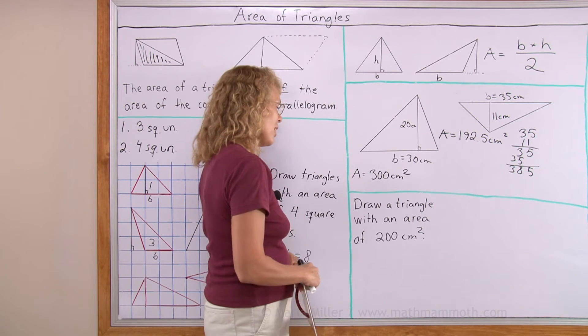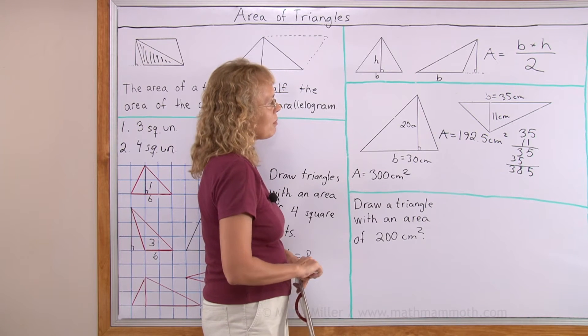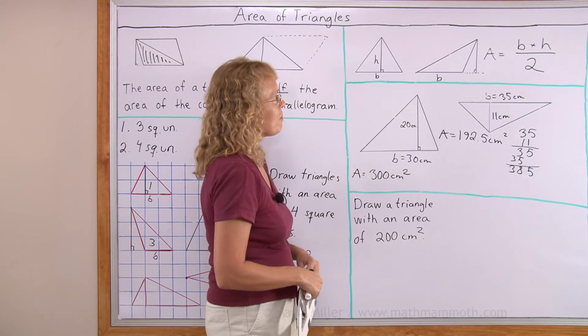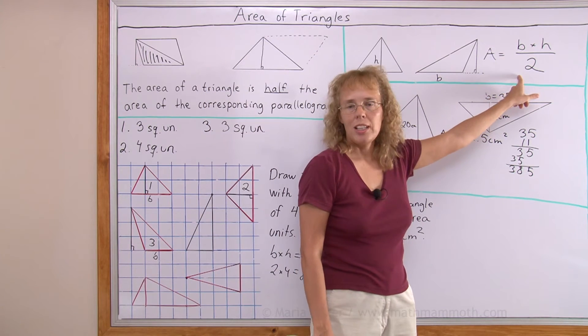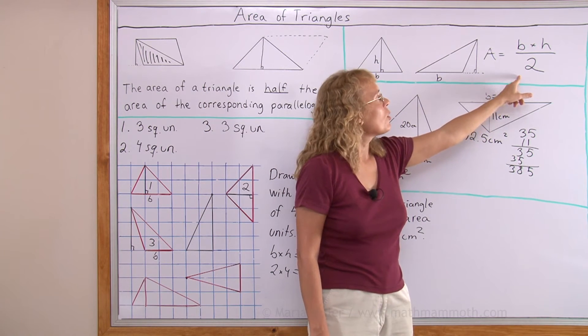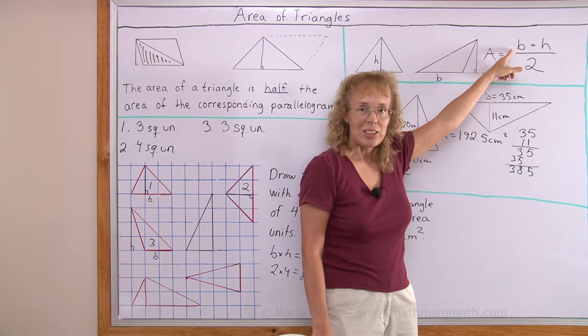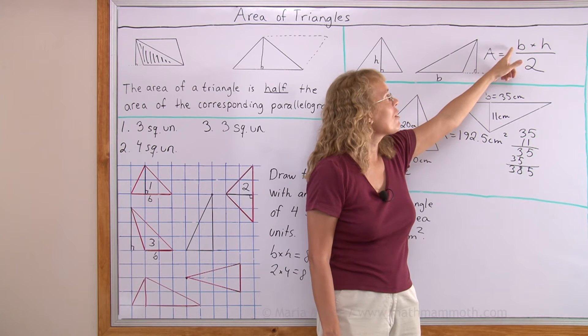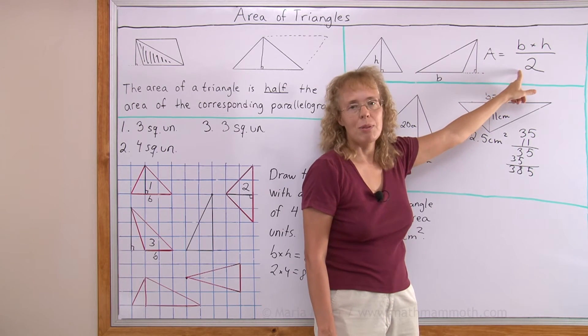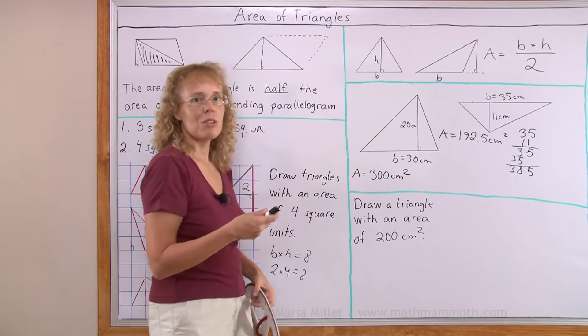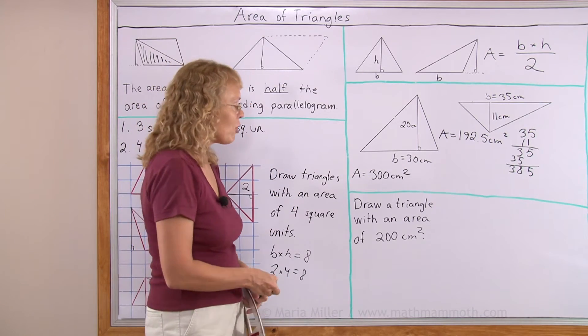Draw a triangle here with an area of 200 square centimeters. Okay. Again, from this I need to get 200. So my base times altitude has to be what? It has to be 400. I have to have 400 here so that when I divide it by 2 I get 200. I have to find two numbers, the base and altitude, that multiplied give me 400.